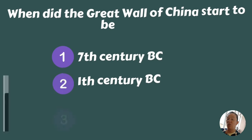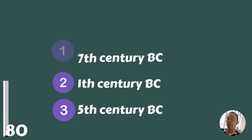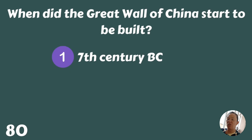When did the Great Wall of China start to be built — 7th century BC, 1st century BC, or 5th century BC? The 7th century BC.